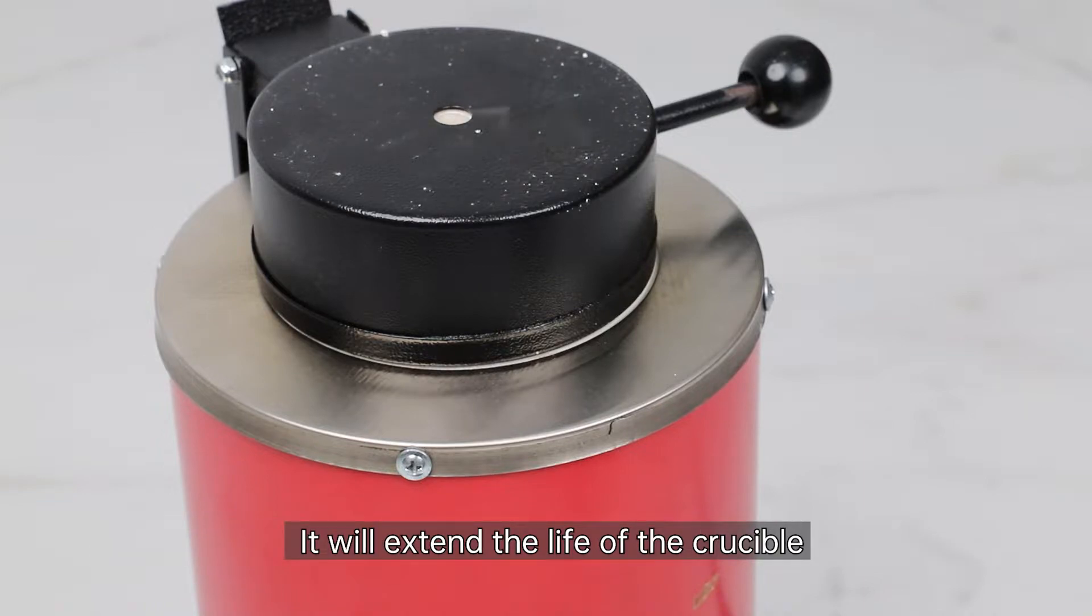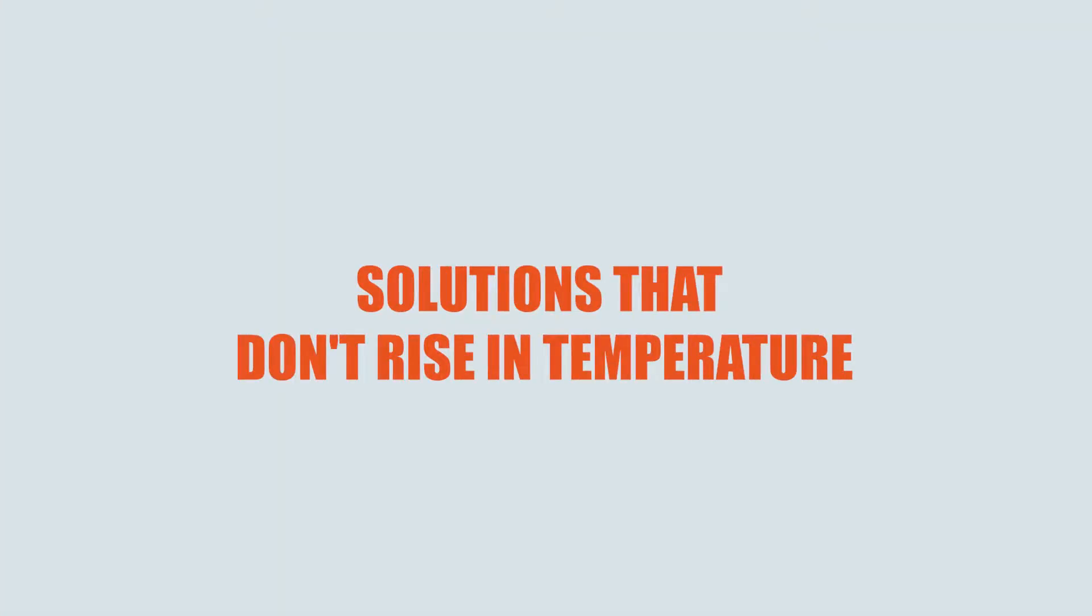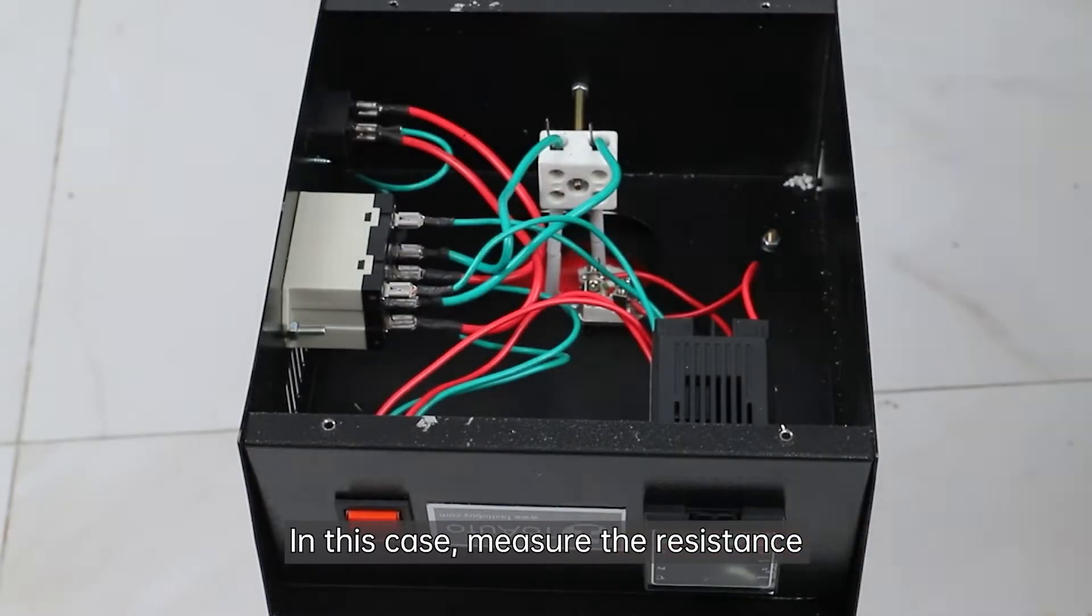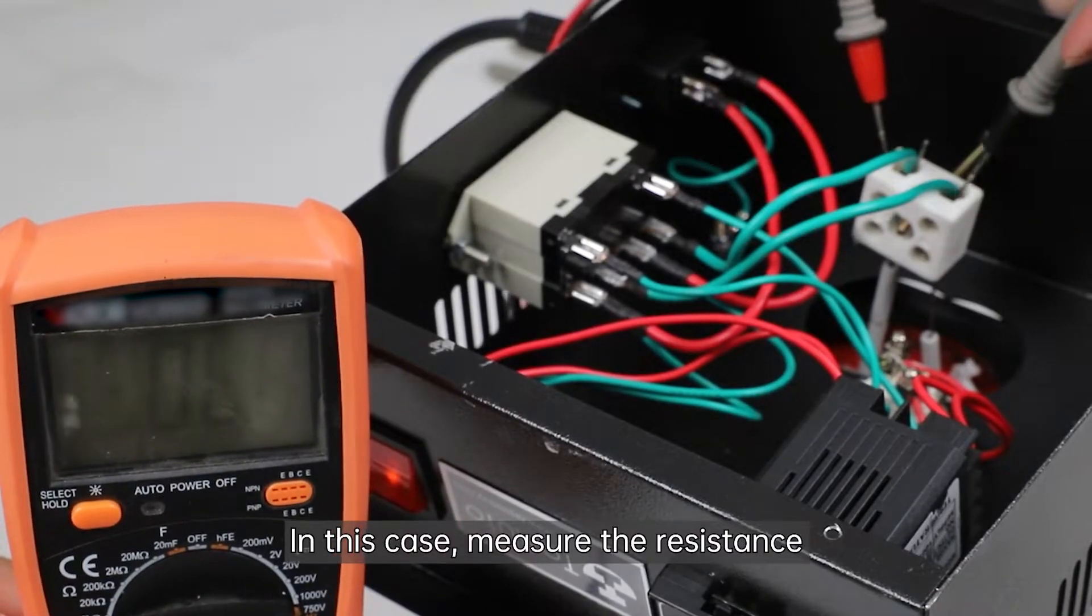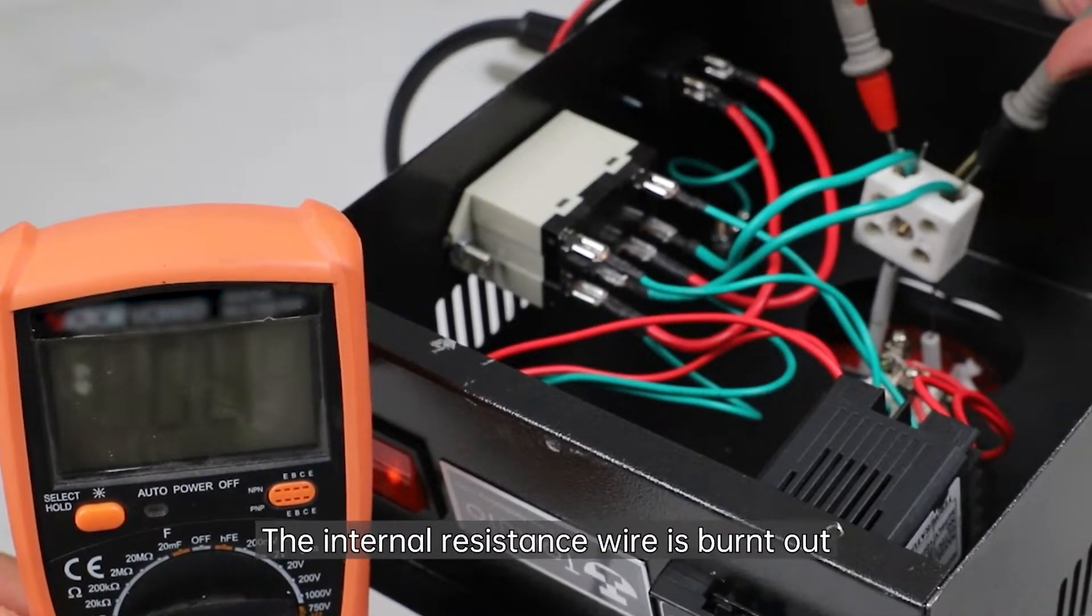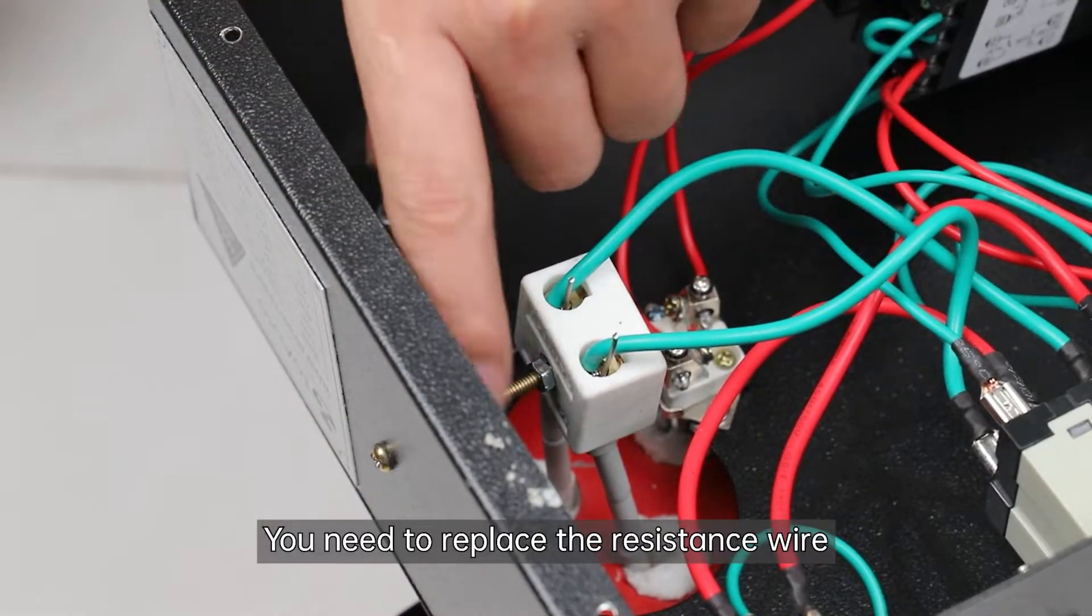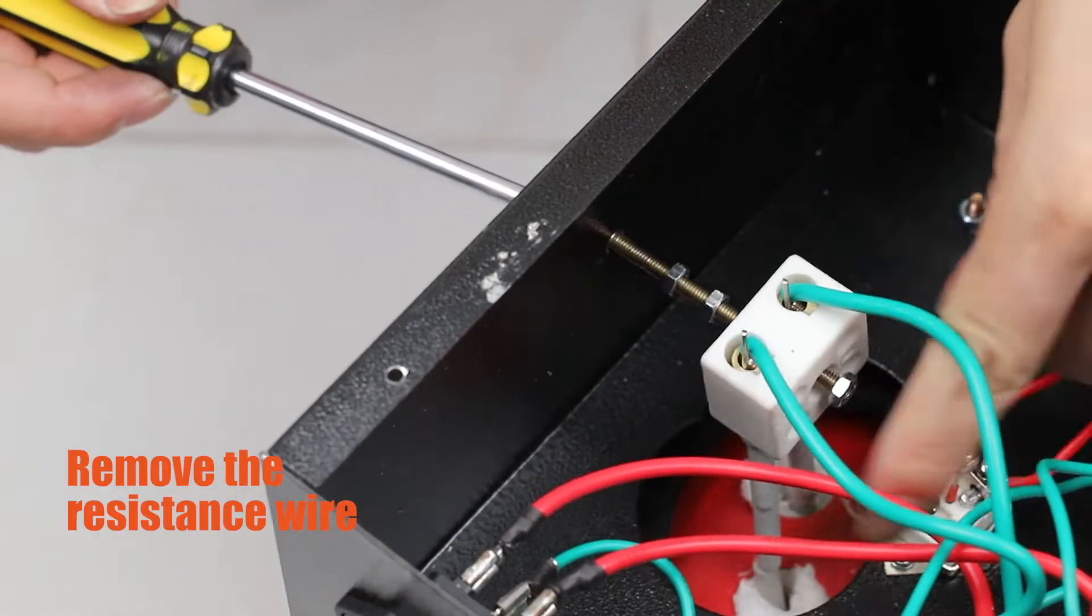It will extend the life of the crucible. Solutions that don't rise in temperature: One, when the machine is started, if the temperature cannot be raised, measure the resistance. If the measured value is zero, the internal resistance wire is burnout. You need to replace the resistance wire. Firstly, remove the resistance wire.